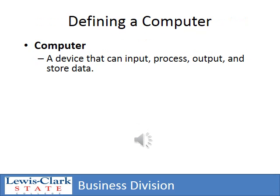For our purposes, we're going to define a computer as a device that stores, retrieves, and manipulates information. As we learn a little bit about the history of the computer, we're going to go beyond the box that you may have right now and realize that a computer does not really have to be electronic.